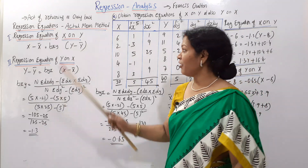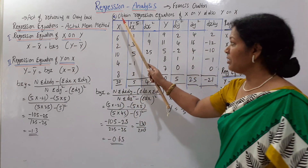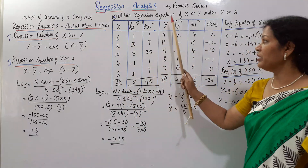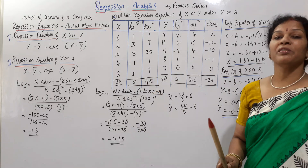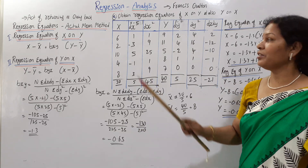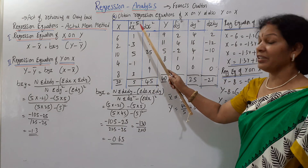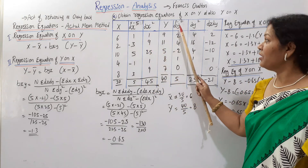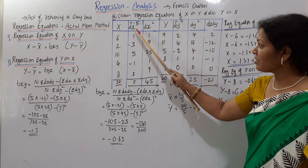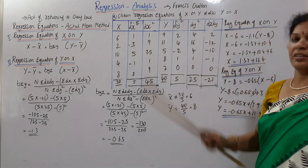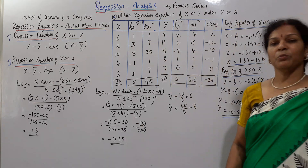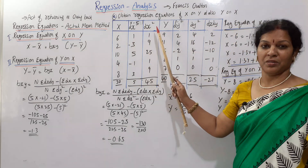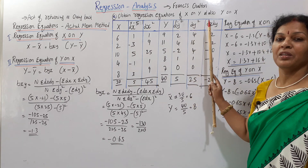Now we have the formula. We set up a table with columns for x and y, then dx, dx², dy, dy², and dx into dy.